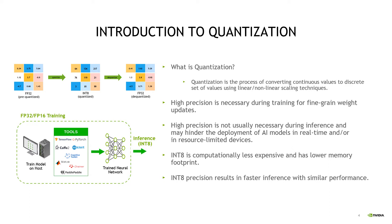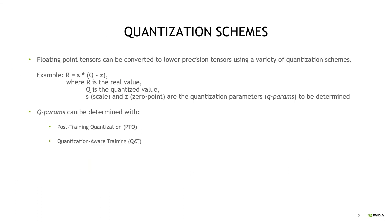However, sometimes there can be a trade-off to accuracy. There are different quantization schemes by which floating point tensors can be converted into lower precision. One standard way to express a real value in terms of quantized value Q is: R equals S times Q minus Z, where S and Z are scale and zero points. These scale and zero points are together referred to as quantization parameters or Q params.